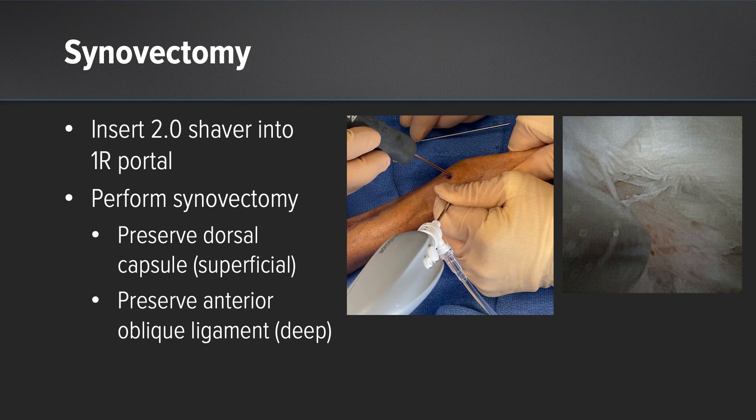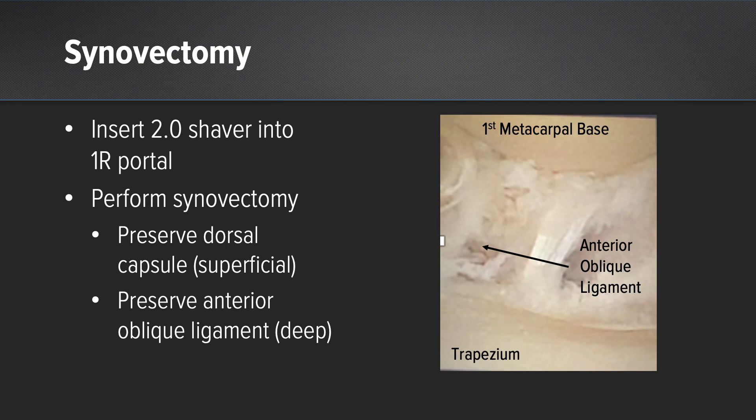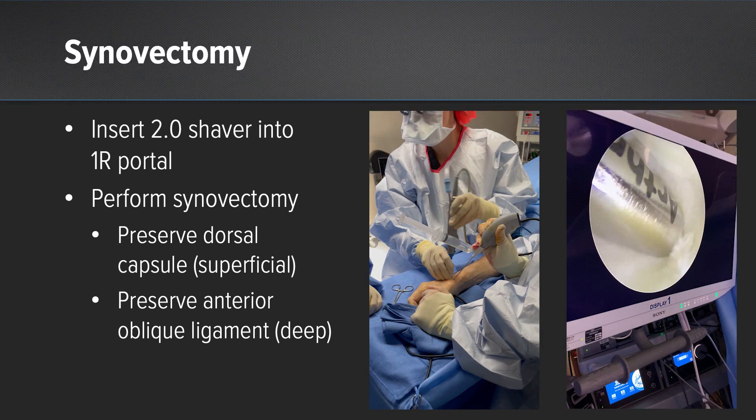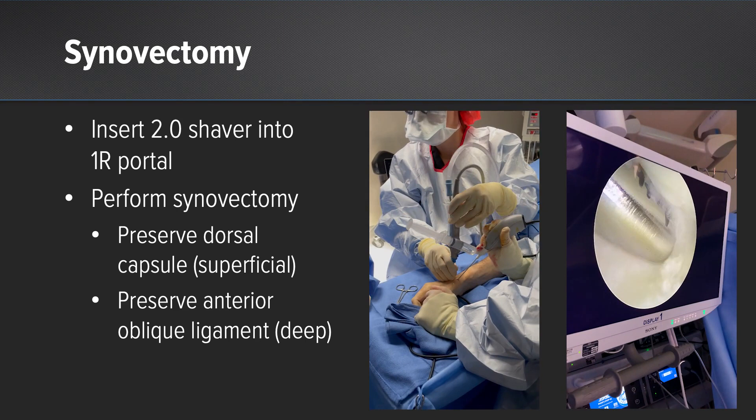Synovectomy can be performed under direct vision, as in this photo. Care is taken to preserve the dorsal capsule, as well as the anterior oblique ligament, as you can see here. This photo also shows arthritic changes in the metacarpal base as well as the trapezium. With the fluid on and the shaver on suction, a synovectomy can easily be performed of both the scaphotrapezial joint and the CMC joint, as you see in this video.